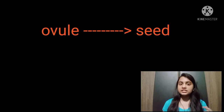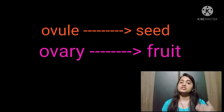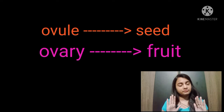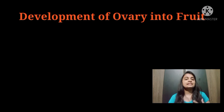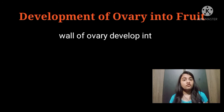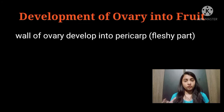We always have two things to keep in mind: ovule is always converted into seed, and ovary is always converted into fruit. So now we are going to study ovary conversion into fruit. The ovary is converted into pericarp.